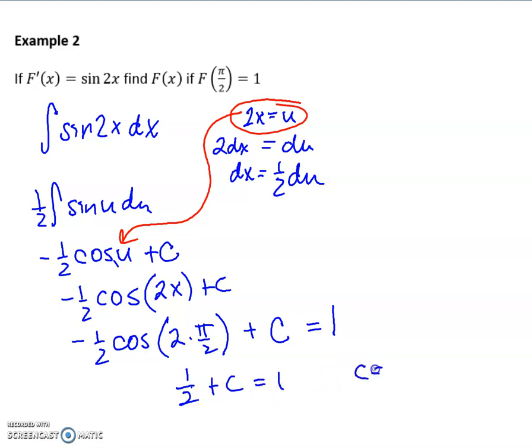So our final answer, again, should be to state the function you got, which is here. Negative 1 half cos 2x, but now we know c to be 1 half.